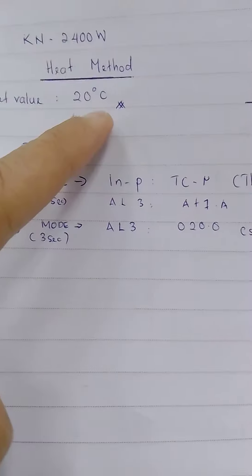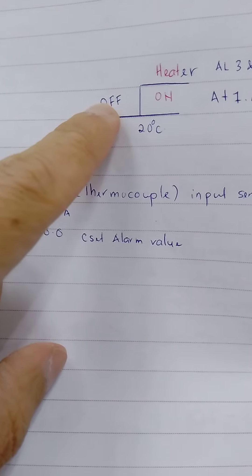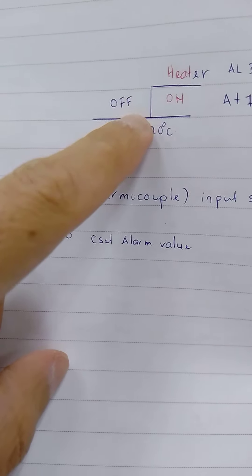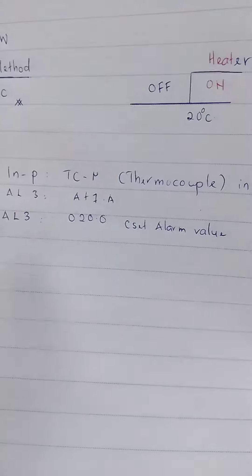Set value is 20, so at 19 it's off, at 20 and 21 until 30 it's on.